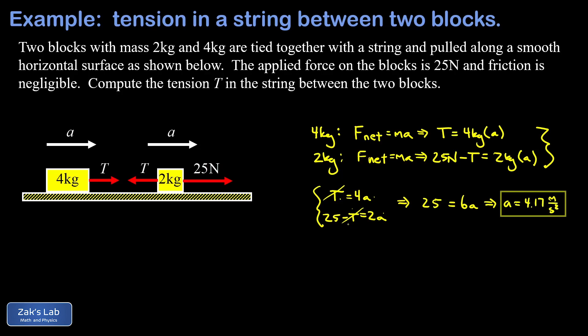Now we have a choice to plug this a back in to either one of the original equations in the system. Either way we go, we're going to end up with the same value for the tension. So I choose the simpler of the two equations, T equals 4a.